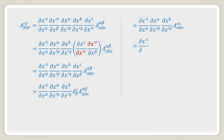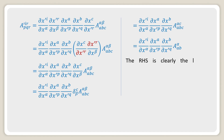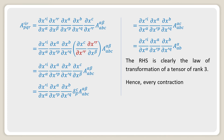In the next step, we can write a^α_ab where α is the upper suffix and ab is the lower suffix. The right-hand side is clearly the law of transformation of a tensor of rank 3. Hence, every contraction in a tensor reduces its rank by 2.